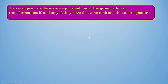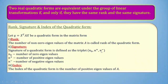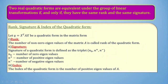What is rank and signature? Let T = X^T AX be a quadratic form in matrix form. The number of non-zero eigenvalues of matrix A is called the rank of the quadratic form. The signature is defined as the triplet (n₀, n⁺, n⁻), where n₀ is the number of zero eigenvalues, n⁺ is the number of positive eigenvalues, and n⁻ is the number of negative eigenvalues. The index is the number of positive eigenvalues of matrix A.